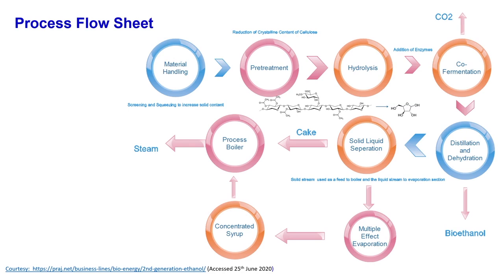This is a process flowsheet for both mechanical and chemical conversion. Starting with material handling: you have the biomass, screening and squeezing to increase solid content. Pretreatment means reducing the crystallinity of cellulose — converting to C5 compounds and C5 sugars. A combination of pretreatment and hydrolysis converts the glycosidic links to C5 sugars. Then you add enzymes and do co-fermentation, generating carbon dioxide, ethanol, and water. The CO2 can be trapped or stored as liquid carbon dioxide — one of the products of the biorefinery.